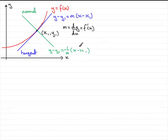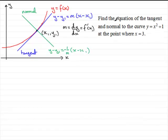I did promise you an example. Find the equation of the tangent and normal to the curve y equals x squared plus 1 at the point where x equals 3. What I've got here is a sketch of y equals x squared plus 1. It will pass through the y-axis at 1 and it will be a parabola.